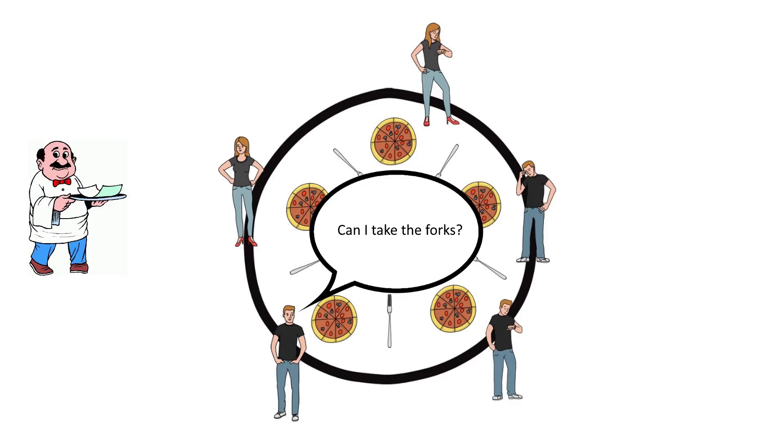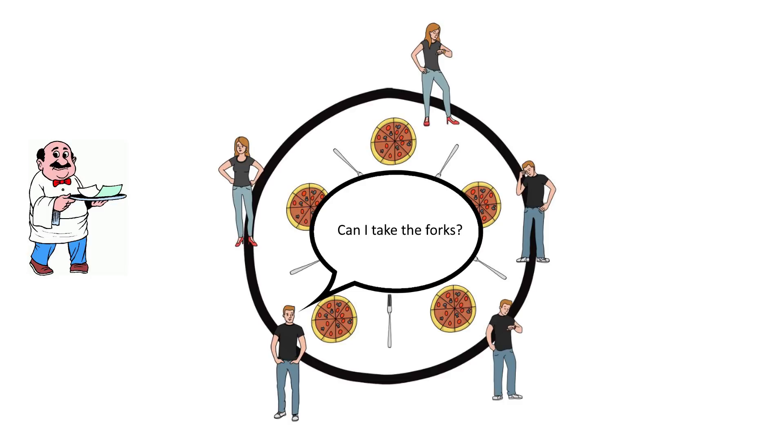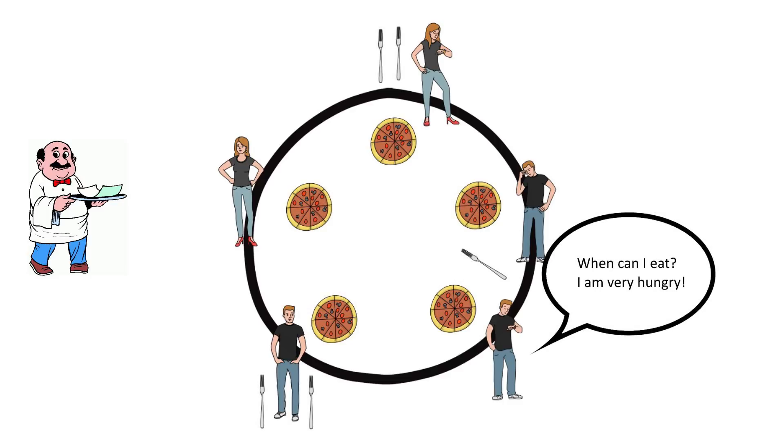Once philosophers one and three finish eating and put down their forks, philosophers two and four can ask for the right to pick up forks and succeed because those forks are now free. But philosopher five doesn't get a turn until the third round. You can even get a situation where philosopher one asks again before philosopher five gets a chance. So you also need scheduling that gives priority to who is allowed to ask for forks — for example, using minutes since the last time they ate, which would bump philosopher five to the top of the queue so he always asks first.